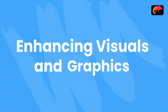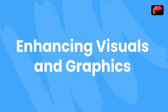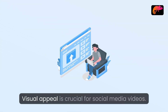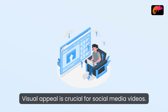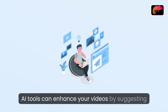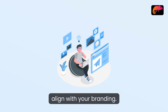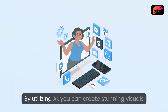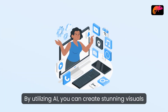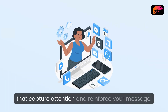Enhancing Visuals and Graphics. Visual appeal is crucial for social media videos. AI tools can enhance your videos by suggesting visual elements like graphics, animations, and transitions that align with your branding. By utilizing AI, you can create stunning visuals that capture attention and reinforce your message.